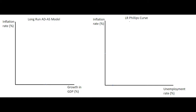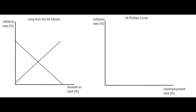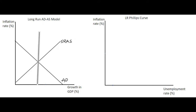In this video we're going to relate the long-run aggregate supply model to the long-run Phillips curve. To do this we will start with our long-run aggregate demand and supply model. We have our downward sloping aggregate demand curve, our upward sloping short-run aggregate supply curve, and also a long-run aggregate supply curve which will be vertical.